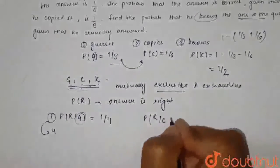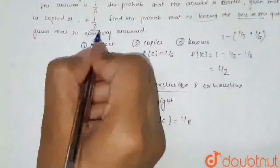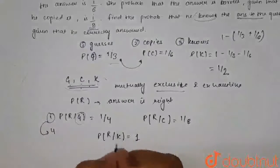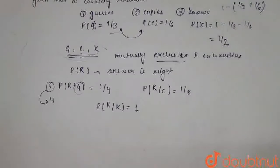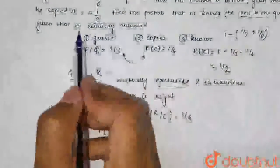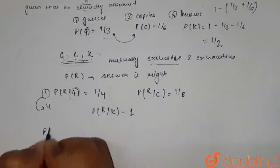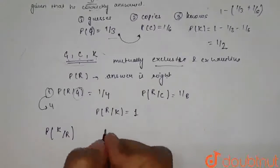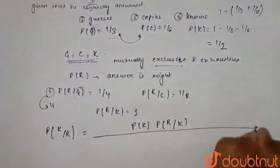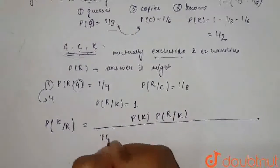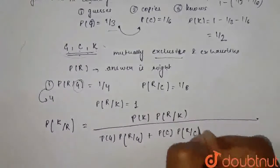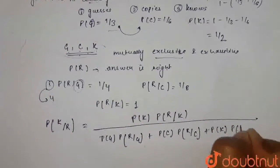The probability that the answer is right when he copies — P(R|C) — is one by eight, which is given in the question. The probability that the answer is right when he knows the answer — P(R|K) — is obviously equal to one. When he knows the answer, it must be the right answer. According to Bayes' theorem, we need to find the probability that he knows the answer given it was correctly answered: P(K) × P(R|K) divided by P(G)×P(R|G) + P(C)×P(R|C) + P(K)×P(R|K).